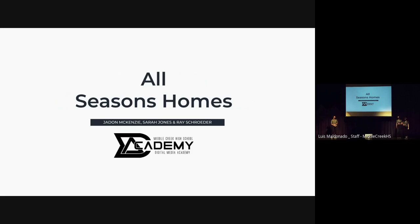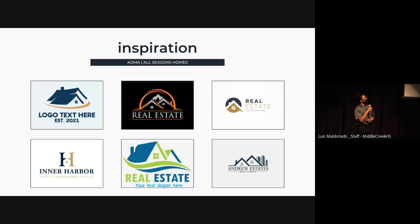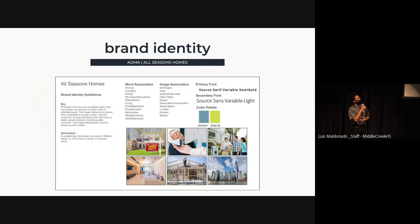Hello, my name is Jayden McKenzie and these are my teammates Sarah Jones and Ray Schrader. We were given the opportunity to create a logo design for the company All Seasons Homes. We started by looking at other real estate logos to find inspiration for the ones that we would be creating. We then had a conversation with the company's owner, Ms. Autumn Hutchinson, in order to gather information about the company and to get her vision for the logos we would be designing. We then took this information and created our brand identity documents that we would use throughout this project as our main point of reference.